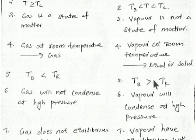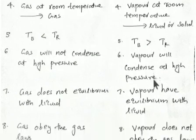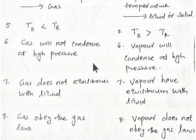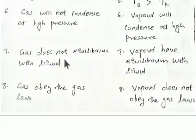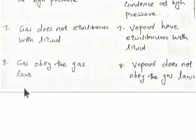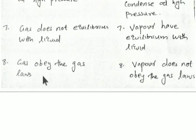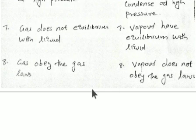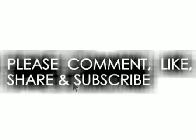For vapors, the boiling point is always greater than room temperature. Gas will not condense at high pressure, but vapor will condense at high pressure. Gas does not reach equilibrium with the liquid; vapor has equilibrium with the liquid. Finally, gas obeys the gas laws — Boyle's law, Charles's law, Avogadro's law, ideal gas law — but vapor does not obey the gas laws.